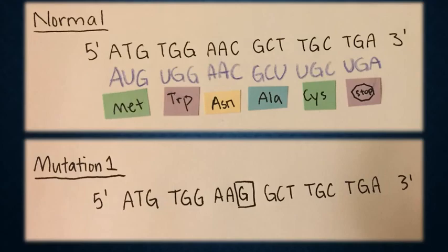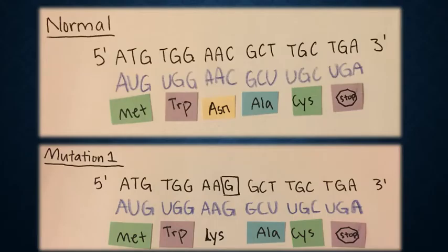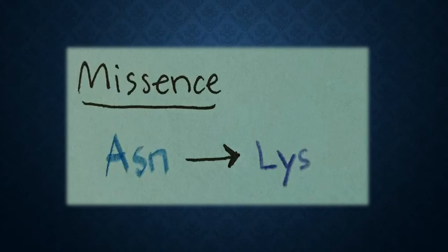Now let's talk about the mutations. In our first mutation, we can see that a cytosine in the normal strand was mutated to a guanine. This is called a transversion mutation because a pyrimidine is changed to a purine. As we can see in the normal strand, the codon AAC translates to the amino acid asparagine, but because of the mutation, the codon AAG translates to the different amino acid lysine. This is called a missense point mutation because the codon which codes for asparagine mutated to a codon for the different amino acid lysine.